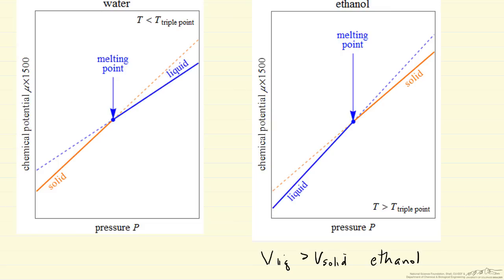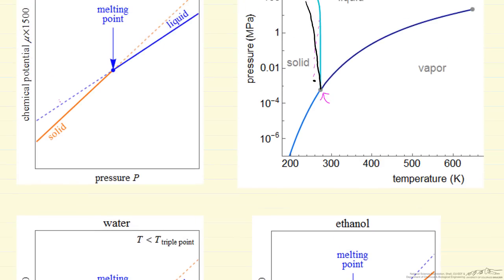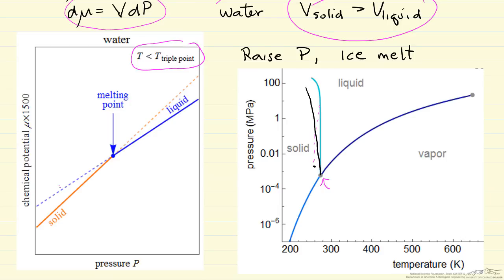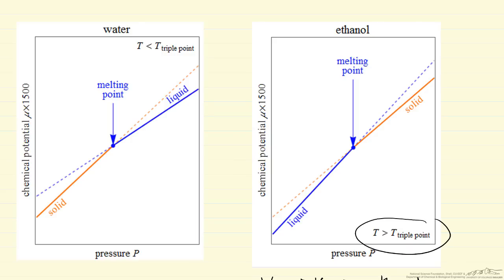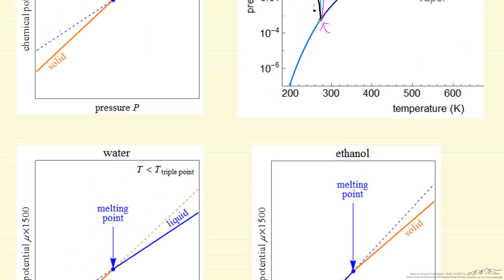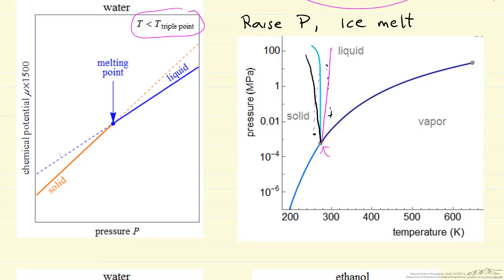Going back to the pressure-temperature diagram, for ethanol the solid-liquid line has a positive slope, which shows that if we start with a liquid and raise the pressure, we cross the line and become a solid. Notice this also says the temperature is greater than the triple point temperature — the opposite of water. Because of that positive slope, we have to be greater than the triple point temperature when looking at ethanol solid-liquid equilibrium.